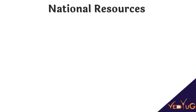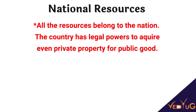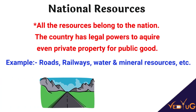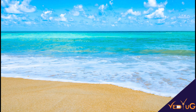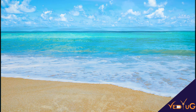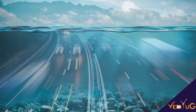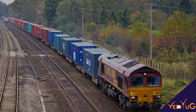The third type is national resources. These resources belong to a particular nation, and the nation has legal power over them for public good — including minerals, wildlife, land within political boundaries, and the oceanic area up to 12 nautical miles from the coast. 12 nautical miles equals 22.2 kilometers. This oceanic area is termed territorial water and belongs to that particular nation. Examples of national resources include roads and railways.